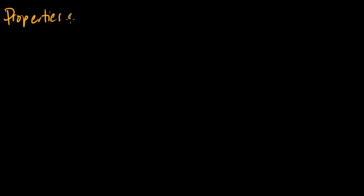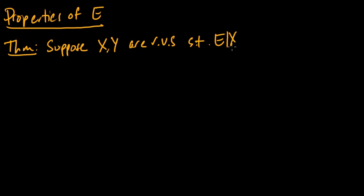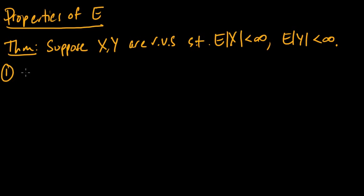There are a number of properties of expectation that make it very easy to work with. We're going to look at some of them in this video. Here's a theorem: suppose X and Y are random variables such that the expected value of the absolute value of X is finite, and the same for Y. These conditions just ensure that everything is well-defined.